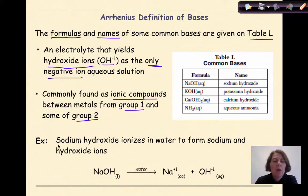Commonly found as ionic compounds between metals from group 1 and some from group 2. So here's an example. Sodium hydroxide ionizes in water to form sodium and hydroxide ions. So we see that sodium is coming from group 1, and it breaks down to individual ions.